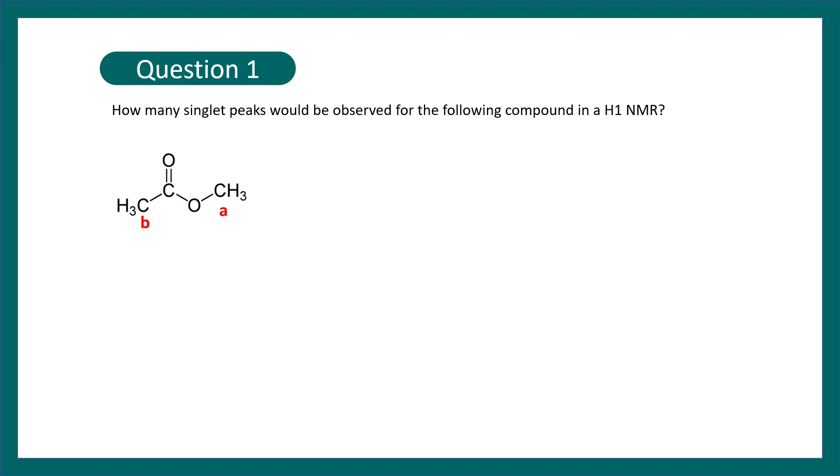Question number one. How many singlet peaks would be observed for the following compound in H1 NMR? So look at the following compound and try to calculate the number of singlet peaks. You might pause the video and try to answer this question. If you have answered it correctly, the total number of peaks that would be observed in this compound is basically two because there are two different types of chemically distinct hydrogen which are labeled as A and B.